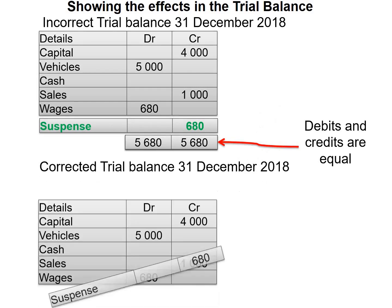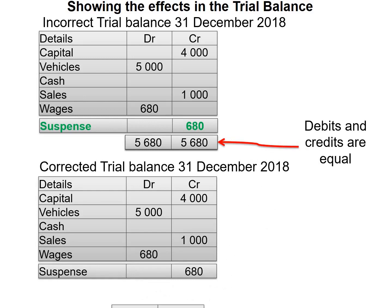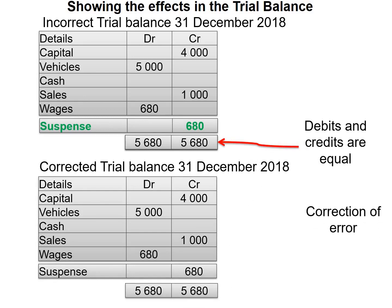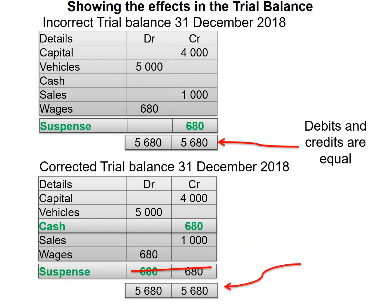Now for our corrected trial balance, our totals agree. But we need to correct our error — since there was no entry in cash, we will credit cash just like we did in our general journal and general ledger. Then we will debit our suspense account to return the suspense account balance to zero. Now our trial balance balances with the correct total.